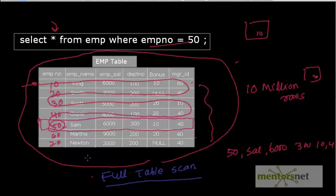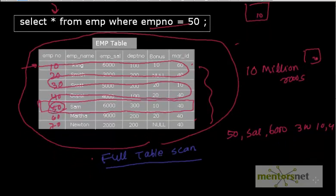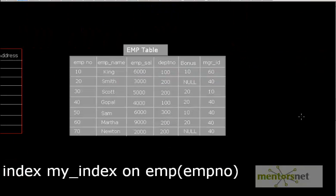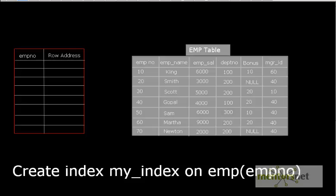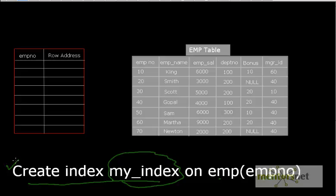Just like the book analogy where the author created an index, we create an index in Oracle. The solution is to create an index using a SQL command: CREATE INDEX. The syntax is: CREATE INDEX index_name ON table_name (column_name). So I'll explain exactly what happens internally when you execute this command.